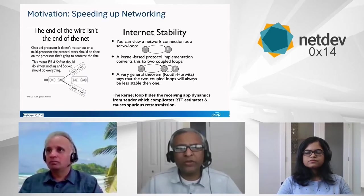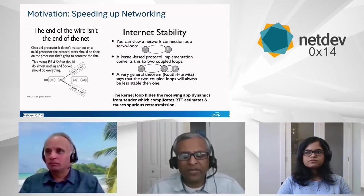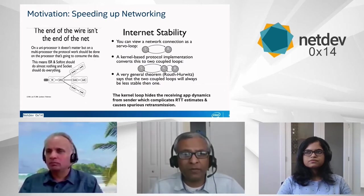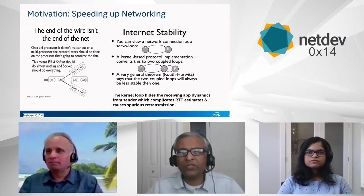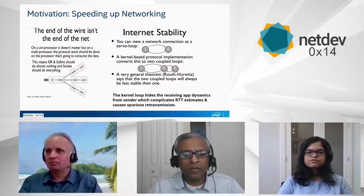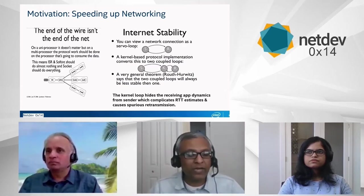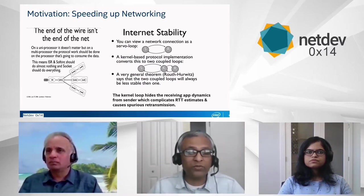Talking about the motivation and speeding up networking — why does it matter? Basically in the Linux conference 2006, there was a paper presented by Jan Wakupsen and the team, and it talked about how the end of the wire isn't the end of the net. If you look at the picture on the left, it talks about basically what they did. They did a small experiment on the uniprocessor system as well as on the multiprocessor system. The experiment was about running the netperf test and seeing whether the performance improves when they go from uniprocessor to multiprocessor.